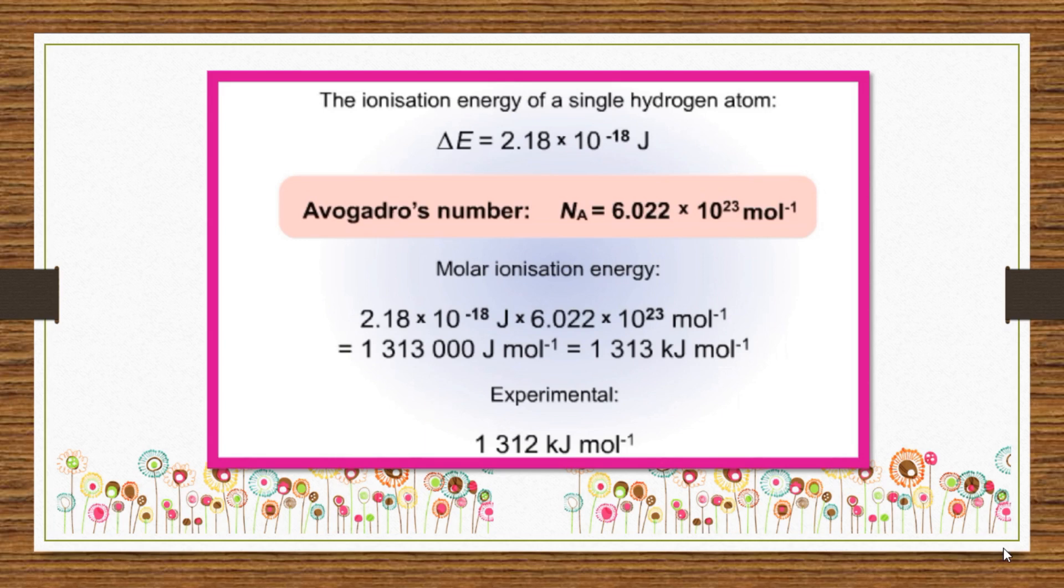Very good matching of the theoretical and experimental values of ionization energy confirms that the simple Bohr atomic model is quite useful in predicting the actual properties of hydrogen.